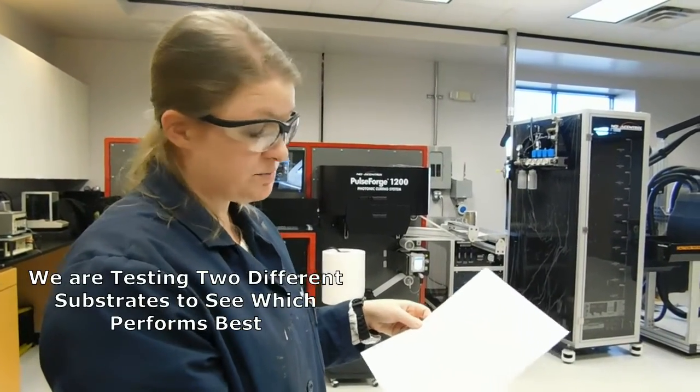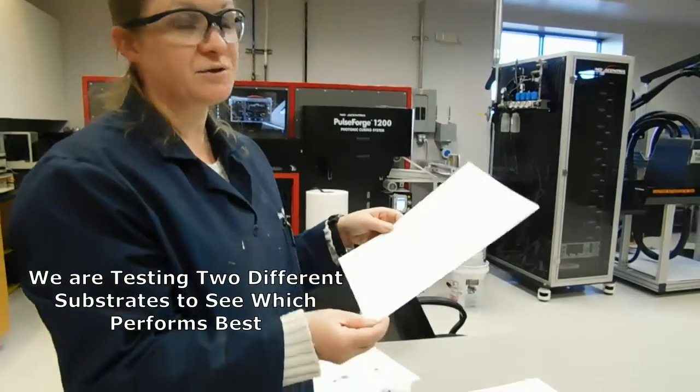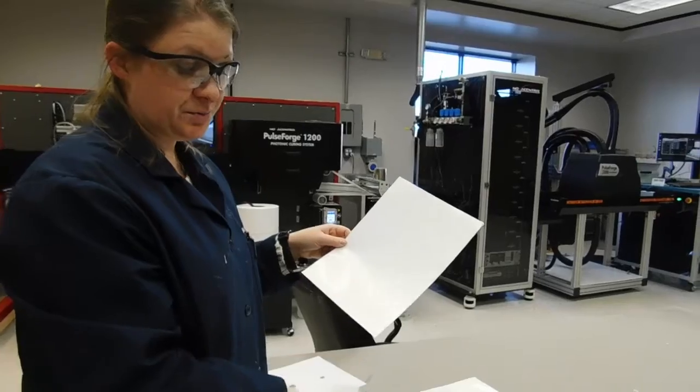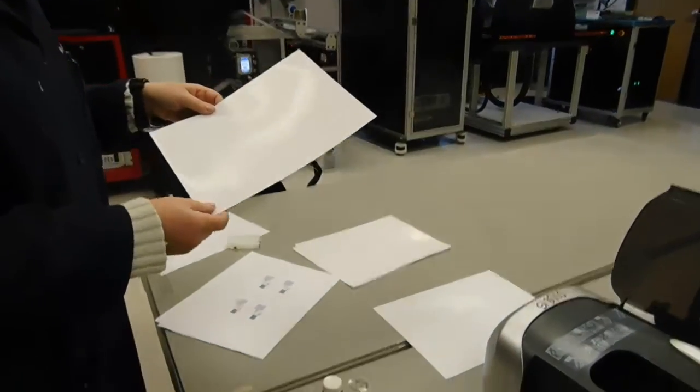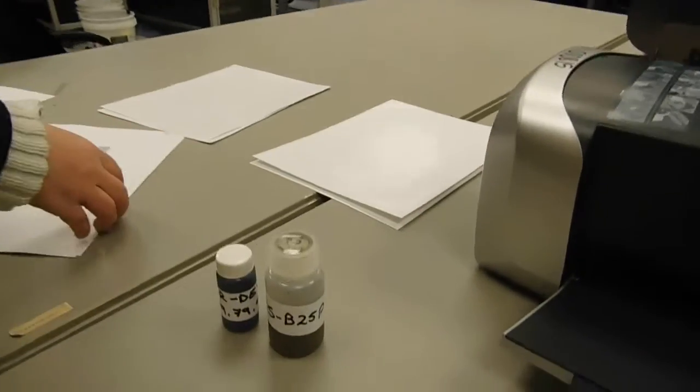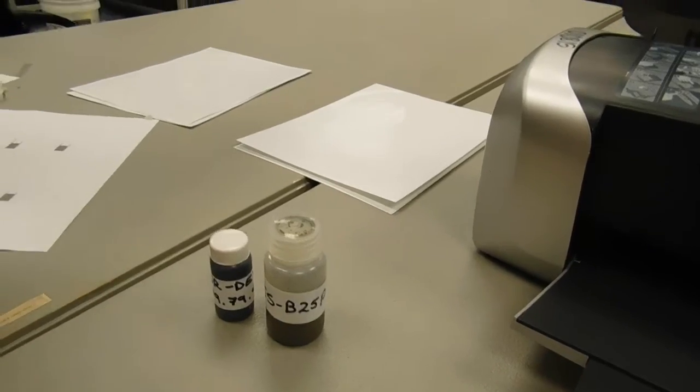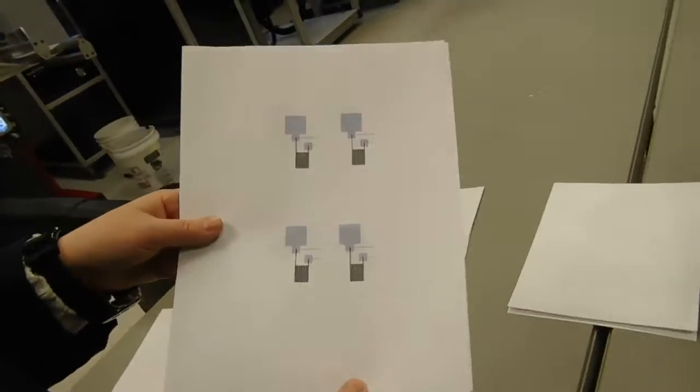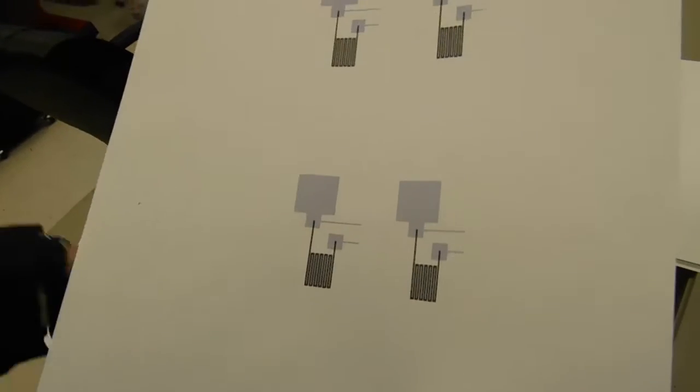But again as before, we're going to print the silver ink, let it dry, and photonically cure it to improve the conductivity. Then we're going to print the carbon resistor over it. Once this is complete we will have a fully capable device that we can attach to an Arduino and use as a capacitive sensor.